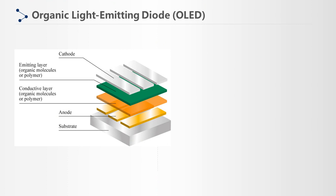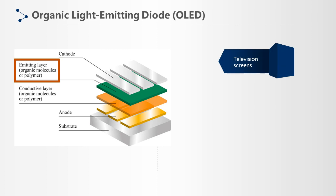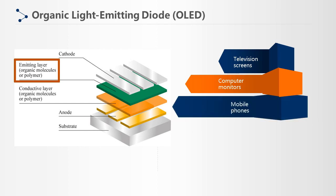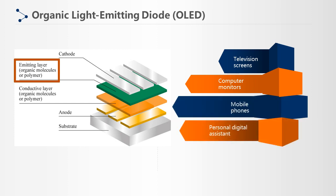An organic light-emitting diode is a light-emitting diode in which the emissive electroluminescent layer is a film of organic compound that emits light in response to an electric current. The layers are situated between two electrodes. OLEDs are used in manufacturing digital displays in devices such as television screens, computer monitors, mobile phones, and personal digital assistants.